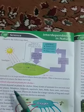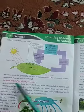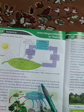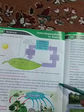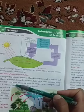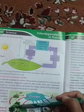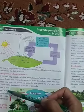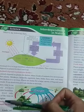Many kinds of animals live on trees and other plants — monkeys, leopards, squirrels, bats, birds, bees, ants, and many other insects live on trees. Plants are homes for a large variety of big and small animals. Even dead trees provide shelter to animals. When a tree is cut, many animals become homeless. We must take care of the trees in our region.